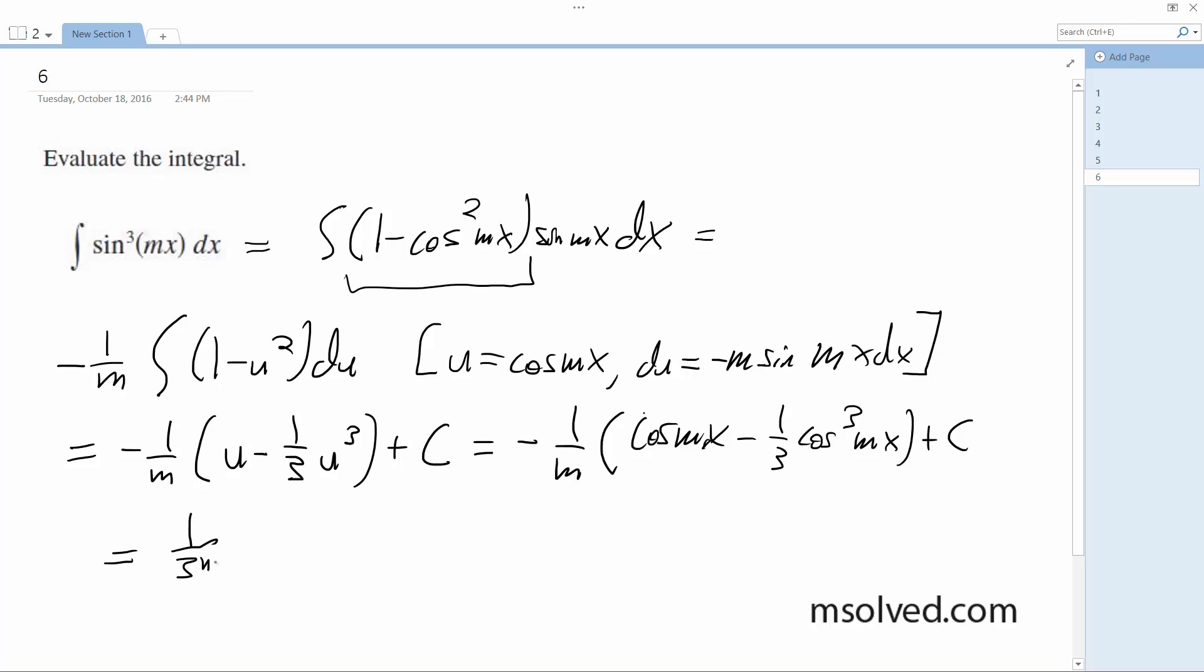This is equal to 1 over 3m cosine cubed mx minus 1 over m cosine mx plus C. That's it, that's after we sub in.